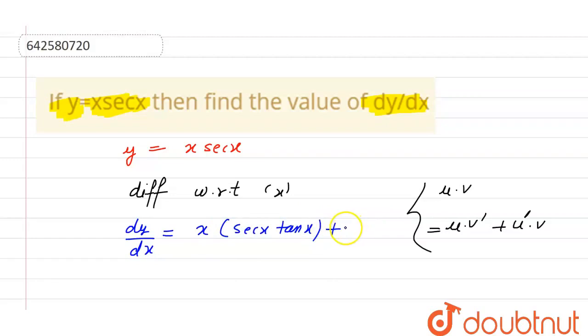Plus, differentiation of first, differentiation of x will be 1, and second will remain as is. Now, we can take secant x common from both. So, we will remain with x into tan x plus 1. Which is the final answer. Thank you.